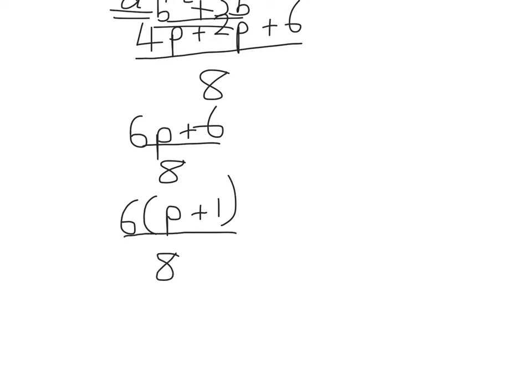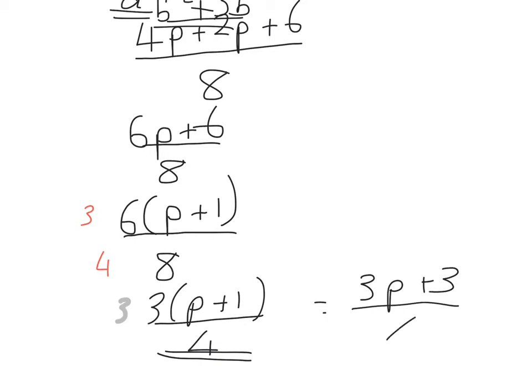6 over 8 can then go down to 3 over 4. So the final answer with this one would be 3 bracket P plus 1 over 4. I could then expand it out, 3P plus 3 over 4.